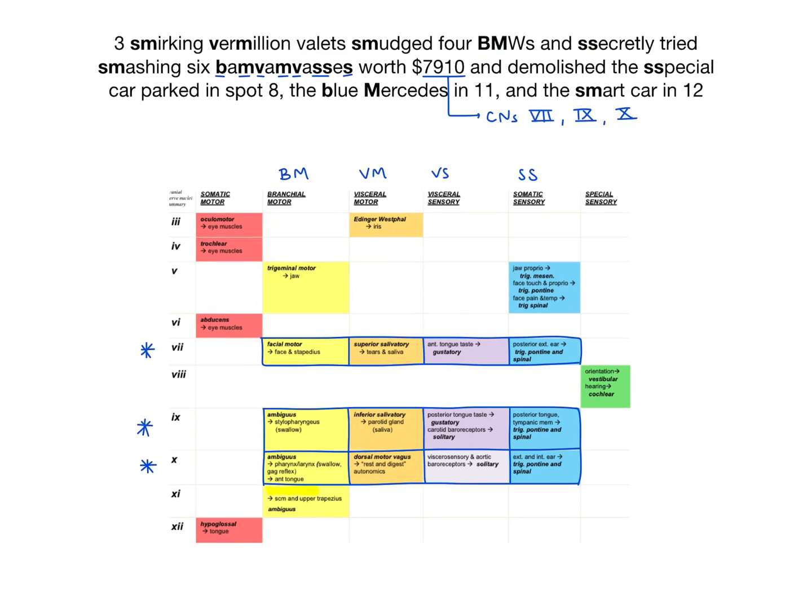Next, the fictional car called the Bam Bam Vase — six Bam Bam Vases each worth $7, $9, $10 — tells you these are cranial nuclei 7, 9, and 10: the facial, glossopharyngeal, and vagus nerves. Below, you see each one outlined with their modalities: branchial motor, visceral motor, visceral sensory, and somatic sensory, underlined and written in blue.